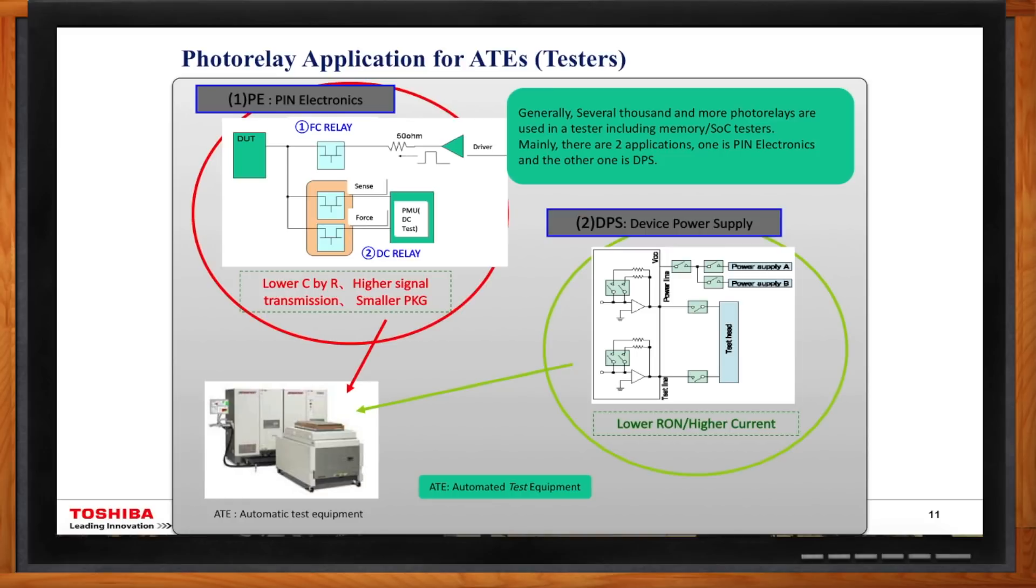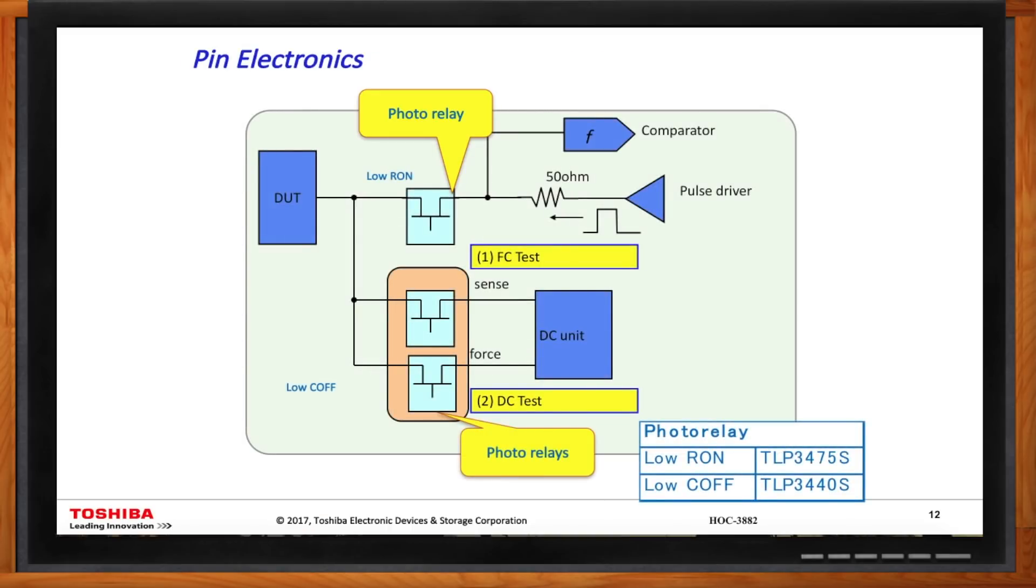Yes. And on the pin electronic side, basically you have the function test, part of the circuitry, where you rely on a photorelay that have a low on-resistant, and Toshiba can definitely supply you with that. One example here is a TLP3475S. In other part of the pin electronics, on the DC test side, you also need to use photorelays. And where in this particular part of circuitry, low capacitance is important. And once again, Toshiba can address that.